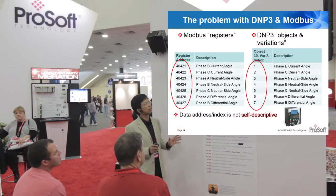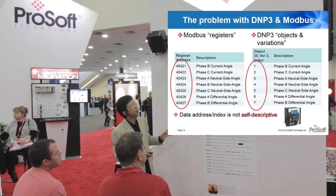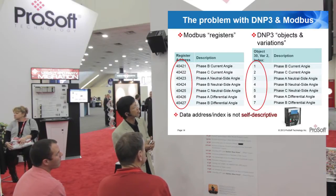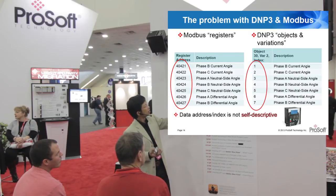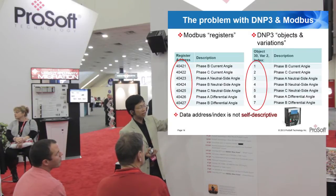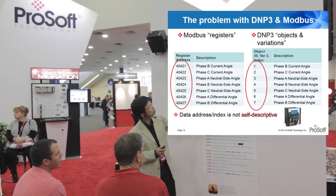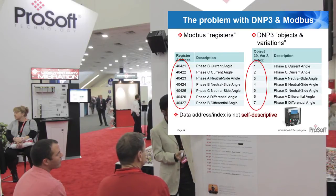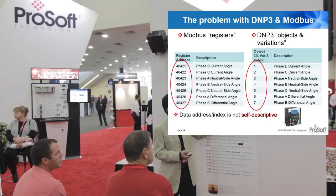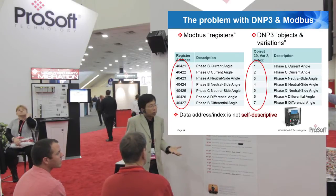DNP3 is still not the perfect protocol. Here's one example of why it still has room for improvement. If you look at typical Modbus registers, data is stored in registers, and without a table or the user manual, there's no way to tell what register 40427 stands for. The same thing applies to DNP3 — they define objects, variations, and indexes that represent something, but again, without a reference table or user manual, there's no way to figure out what everything means.